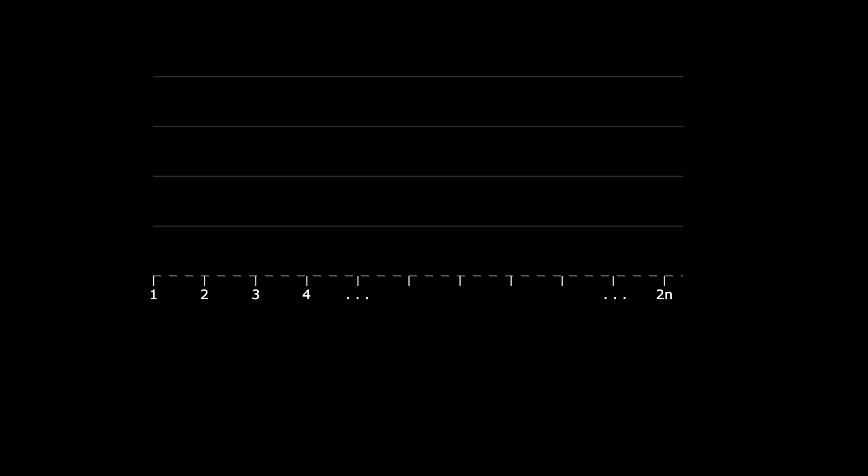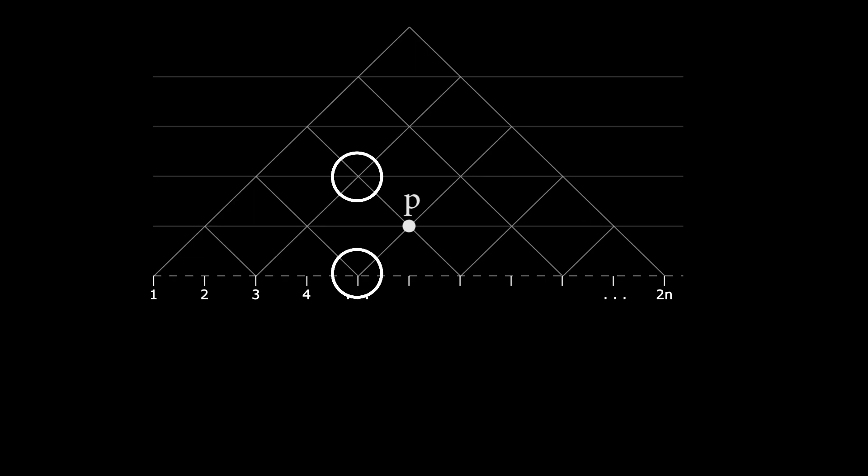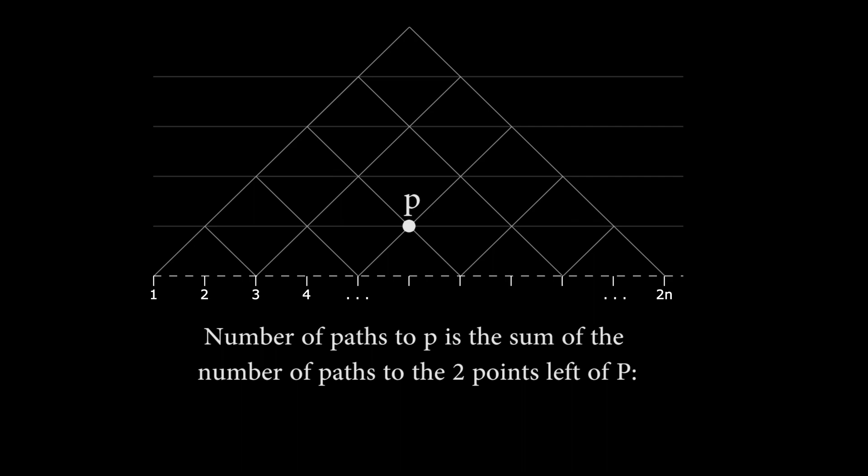But let's ask ourselves an easier question to begin with. How many paths are there to get to the point p? Well, notice that to reach this point, we must pass through one of the two points to its left, since these are the only points that can reach p in one step. So the total number of paths to p will be the sum of the number of paths to these two points. Since we could either take any path to the first point, then step to p, or take any path from the second point, then step to p. Using this method, we could compute the number of steps it will take to reach any point in the lattice.